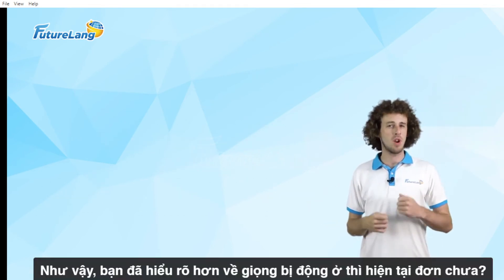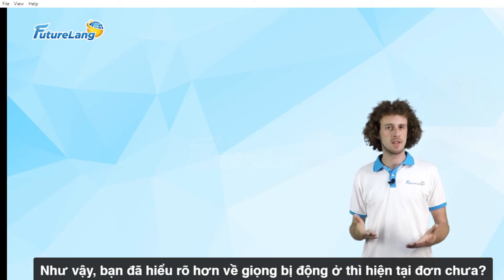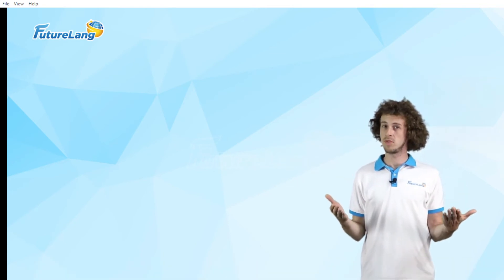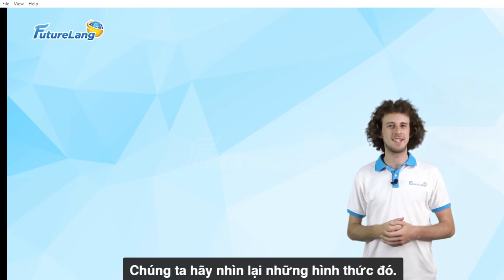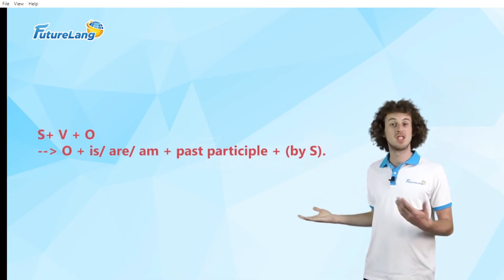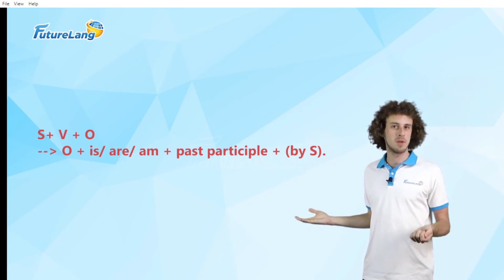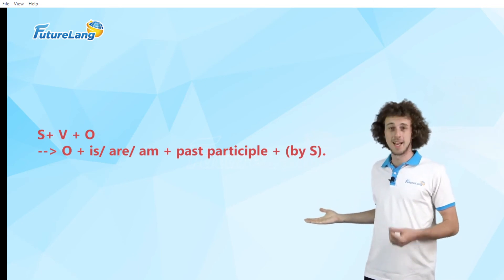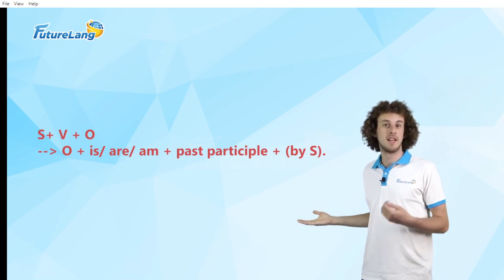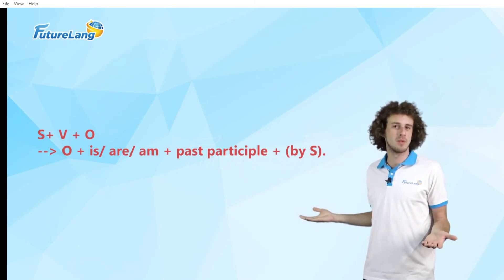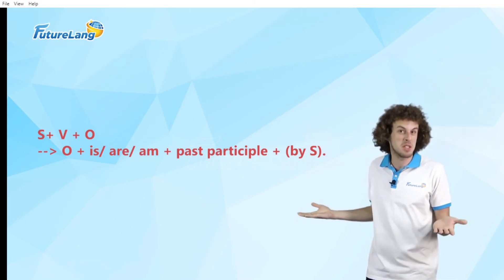So, have you got a better understanding of the passive voice in the present simple? Let's look at those forms again. Subject plus verb plus object is changed to object plus is/am/are plus the past participle, plus by subject.